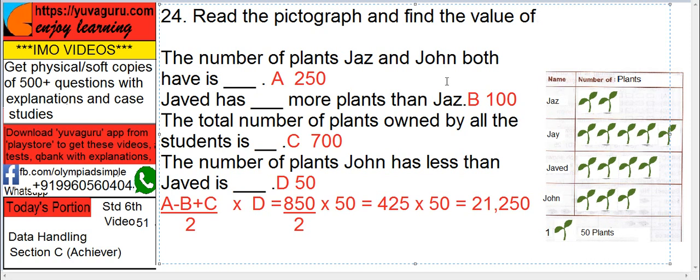Last is, A minus B plus C upon 2, the whole upon 2, into D, equals to, if you total this, A minus B 150, plus C 700, 850 upon 2, 425, into 50. You do this, you will get 21,250.